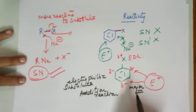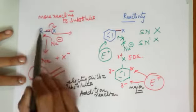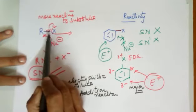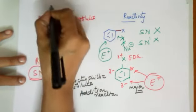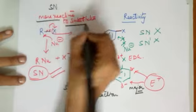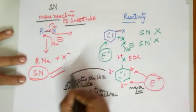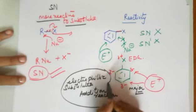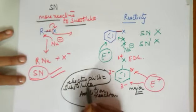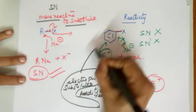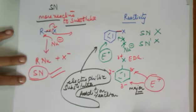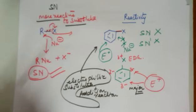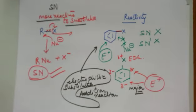To summarize: haloalkanes undergo nucleophilic substitution reactions, while haloarenes undergo electrophilic substitution reactions easily, and that too at the ortho and para positions. I hope this makes understanding this chapter with respect to reactions easier. Do well — all the best!